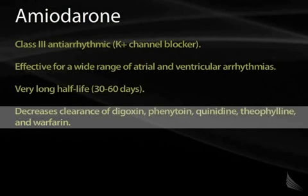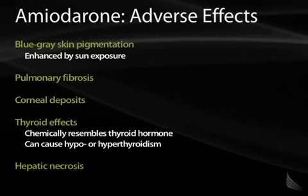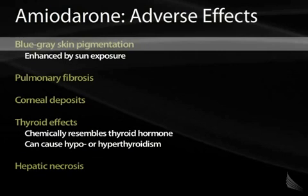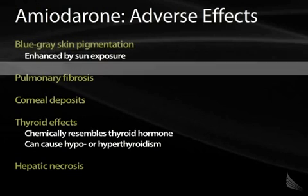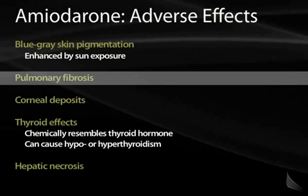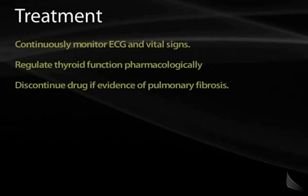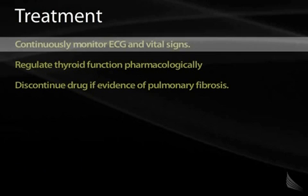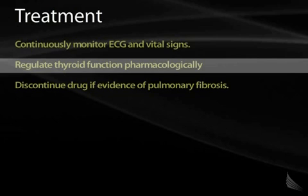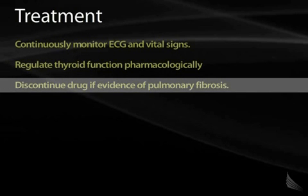Amiodarone also decreases clearance of many medications. As discussed, this patient has blue-gray skin pigmentation, and his lung sounds and chest X-ray are worrisome — he may have developed pulmonary fibrosis. Treatment is to monitor his ECG and vital signs, regulate his thyroid function pharmacologically by checking TSH levels, and if pulmonary fibrosis is present, discontinue the amiodarone.